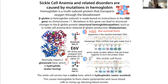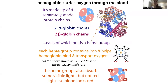Sickle cell anemia is caused by a mutation in the gene for one of the subunits of beta hemoglobin. Hemoglobin is this protein complex that transports oxygen throughout your bloodstream, and it has to hold on to oxygen and travel throughout the bloodstream, going from oxygen-rich environments to oxygen-poor environments over and over again.